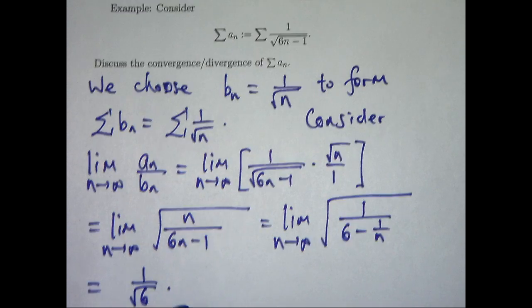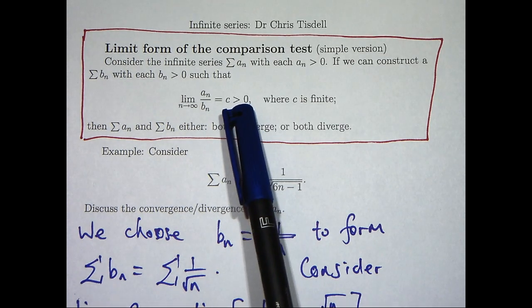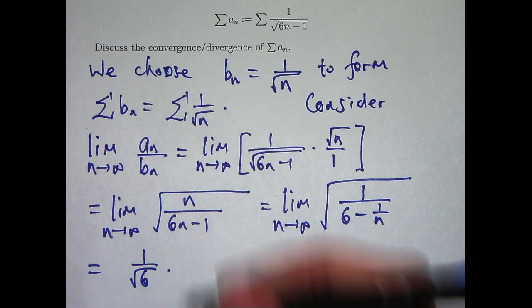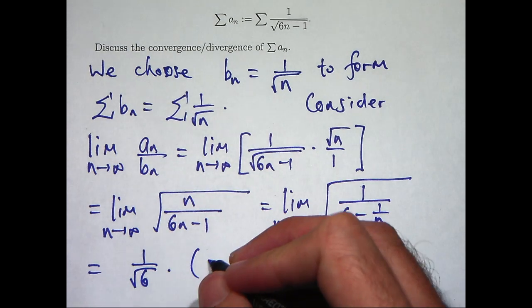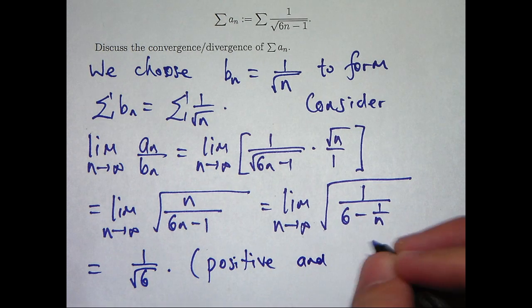So now let's look back and see what we're aiming for here. We're aiming for the limit to be a positive finite value. If we look down, we see yes, this is positive and finite.